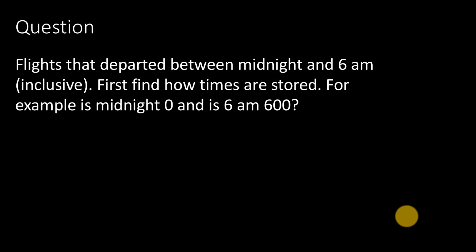For flights that departed between midnight and 6 a.m. inclusive, we need to understand how times are stored in the data. Looking at the data, times like 1500 and 600 appear. The times are stored in military format, so 600 means 6 a.m. and midnight is 0. Before using this, we should verify this hypothesis rather than just assuming it from the data description.